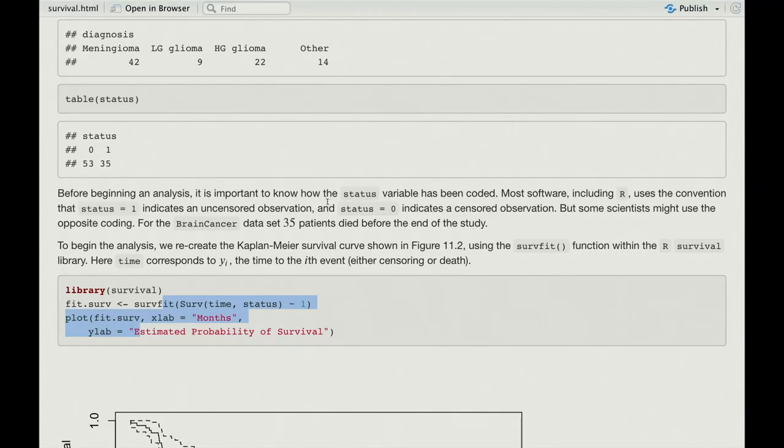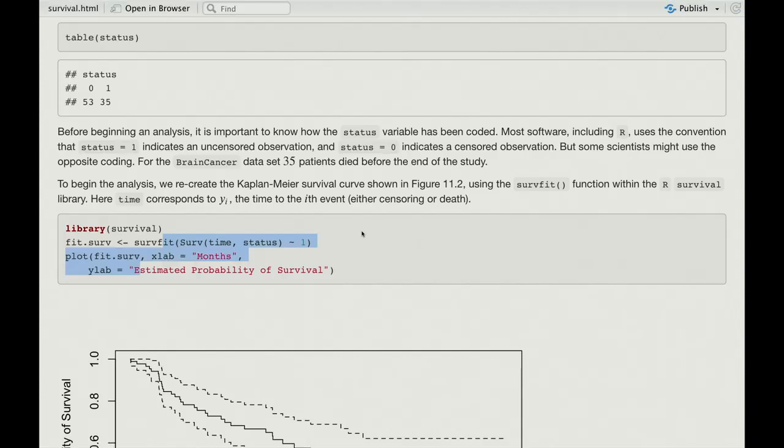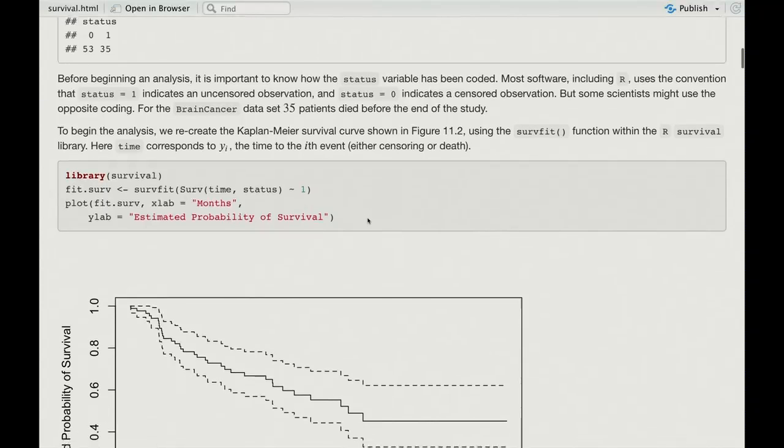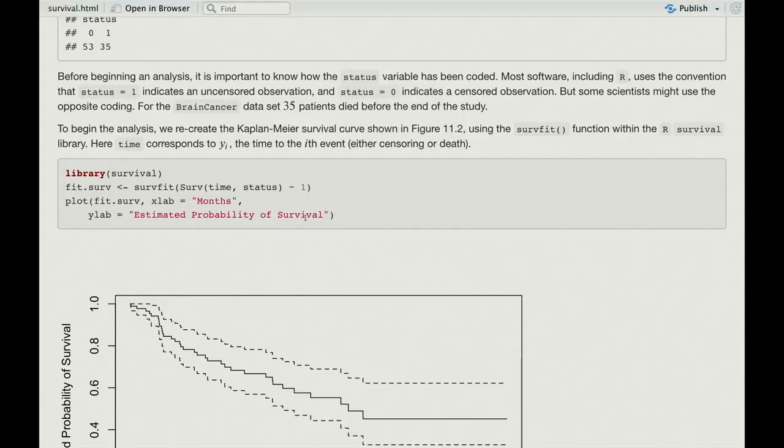So the first thing we do is we'll plot a Kaplan-Meier survival curve, as shown in the text. And for that, we use a survfit function. And it uses a formula and a particular incantation for the response. So there's a function Surv, which takes a time and the status. So the status is part of the response, whether it's censored or not. And in this case, we just model it as one, a constant. So we just want a marginal survival curve for all the data. Okay? And so that survfit does that for you.